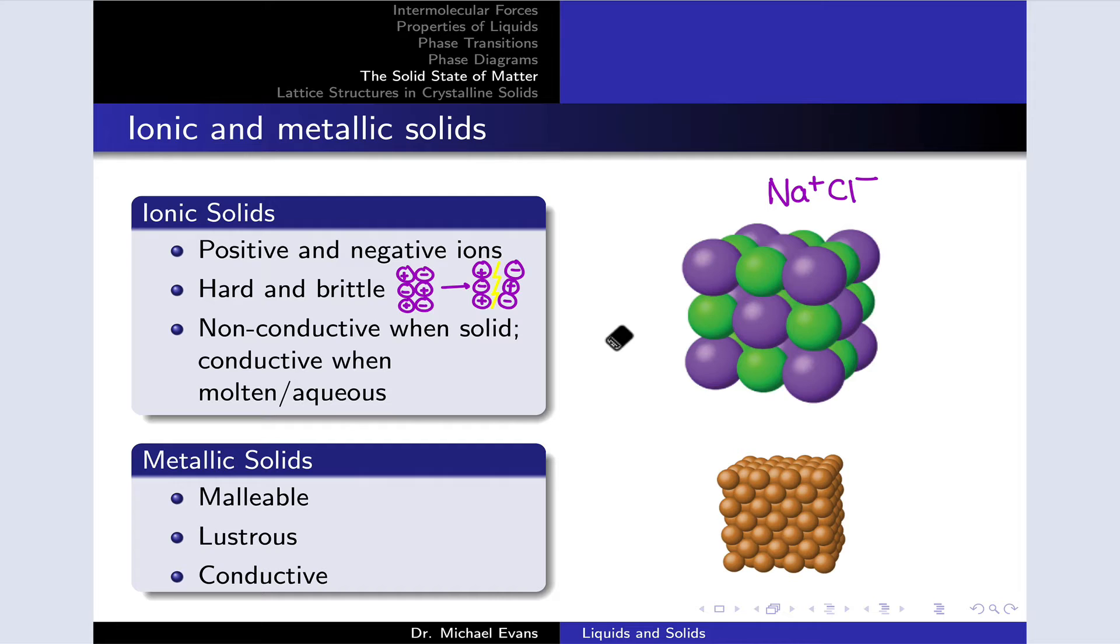Now ionic solids in the solid form are non-conductive because the ions are stationary, but in situations where the ions get moving, these materials become conductive. So for example, when the material is molten, when sodium chloride is melted down into liquid Na+ Cl-, it becomes conductive. And when sodium chloride is dissolved in water to form an aqueous solution and the ions are freed up and able to flow throughout the solution, we again get a conductive situation.